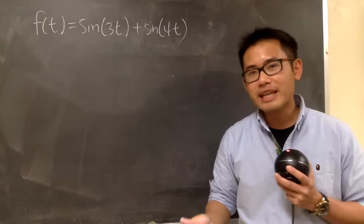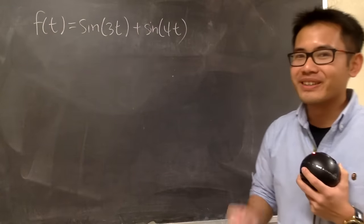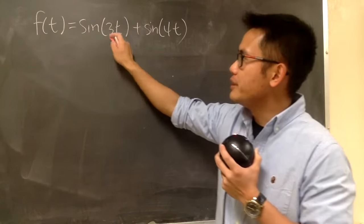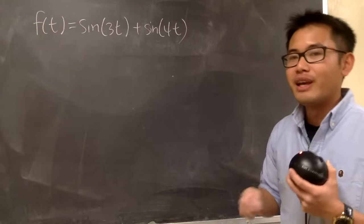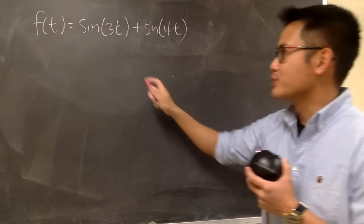So now let me show you guys how we can find a period for the sum of two periodic functions when the sum is still periodic. So let's take a look at this right here. Let's say f(t) is equal to sin of 3t plus sin of 4t. First of all, we have to know the period for the first one and the second one, right? So let's do that.